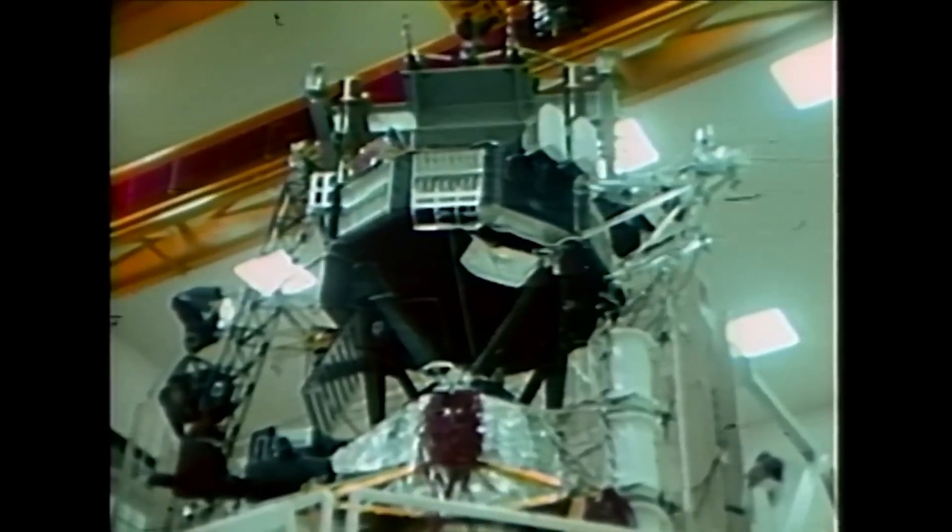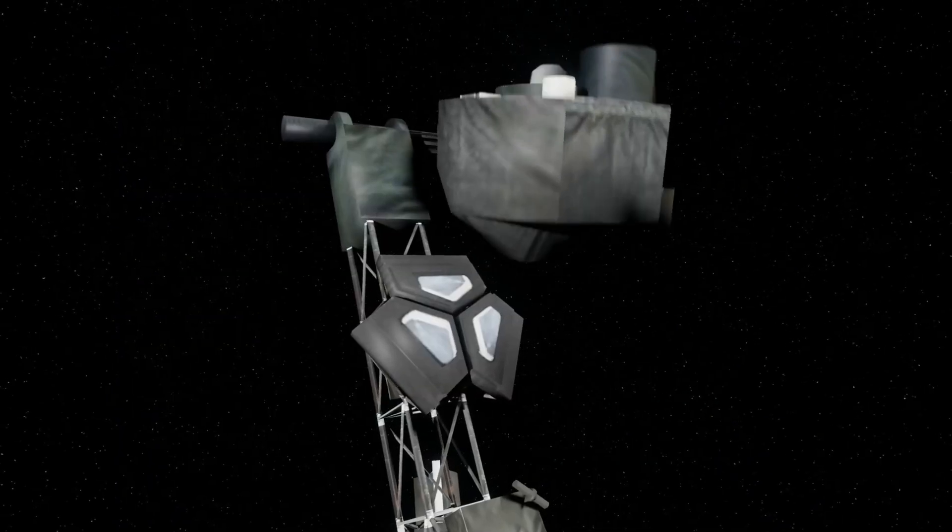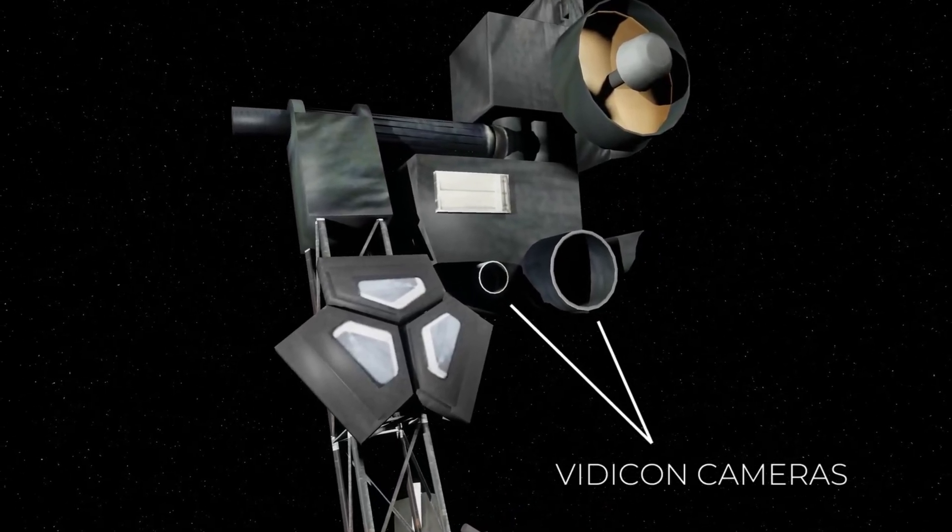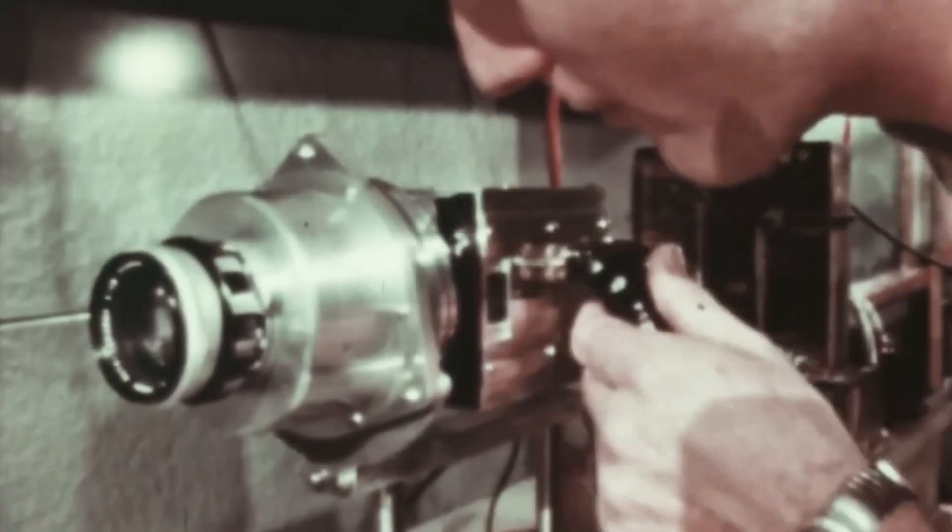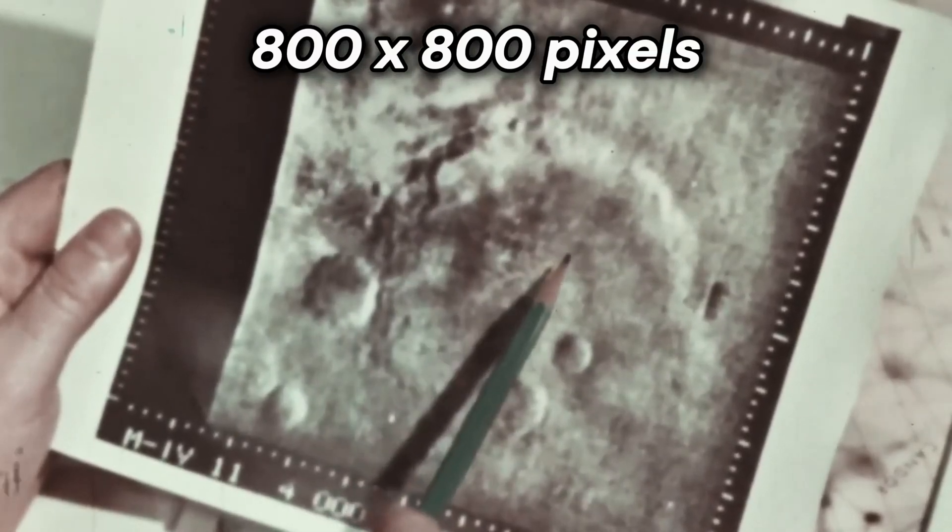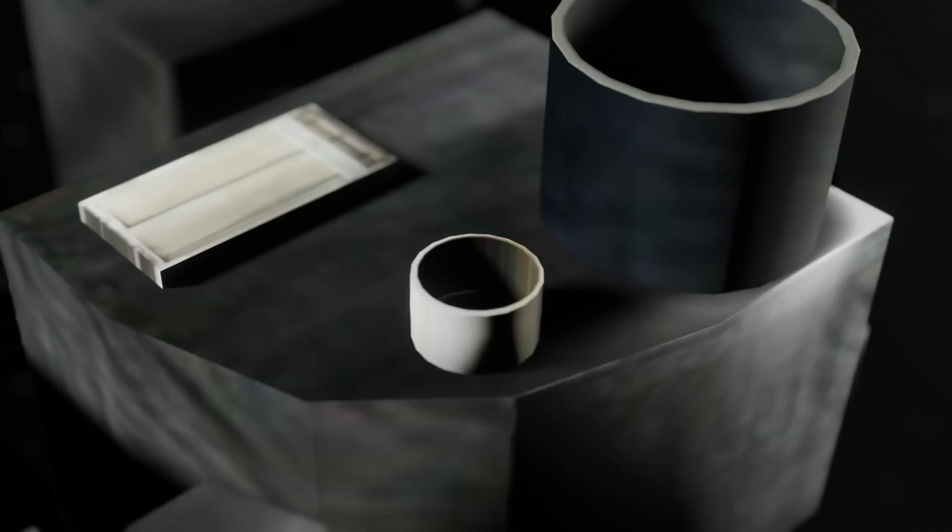Voyager 1 was filled with technology that was way ahead of its time, and a perfect example of that is the camera system. Voyager 1 has two vidicon cameras on board, which are essentially very early television cameras using analog to digital technology. They had an effective resolution of 800 by 800 pixels and captured 8-bit images in grayscale.